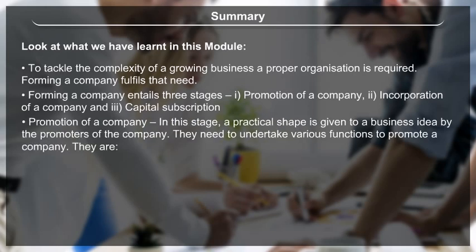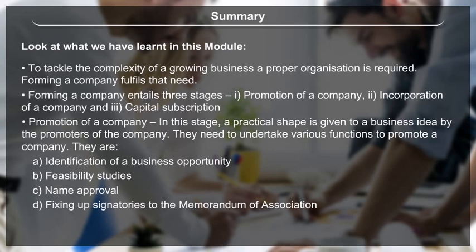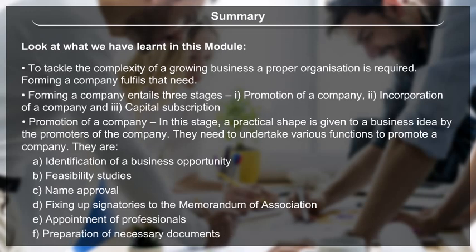Promotion of a company: In this stage, a practical shape is given to a business idea by the promoters. They need to undertake various functions: A. Identification of a business opportunity, B. Feasibility studies, C. Name approval, D. Fixing up signatories to the Memorandum of Association, E. Appointment of professionals, F. Preparation of necessary documents.